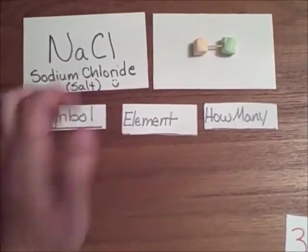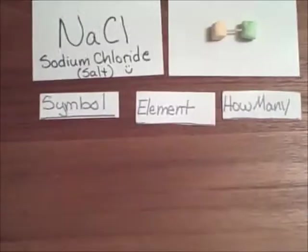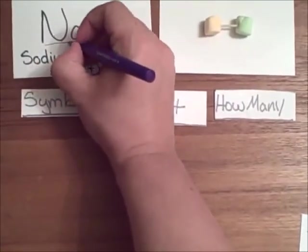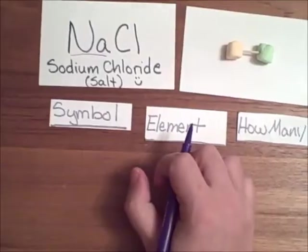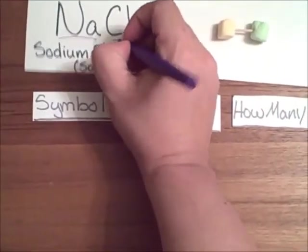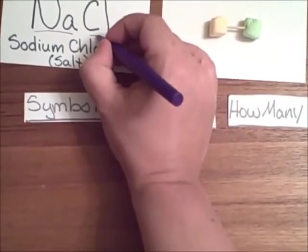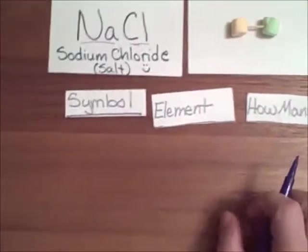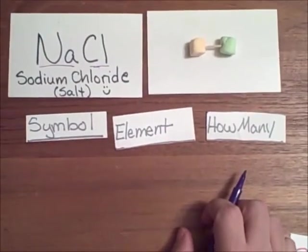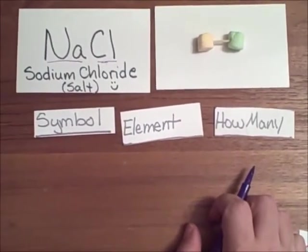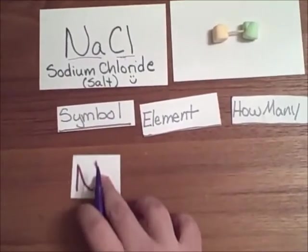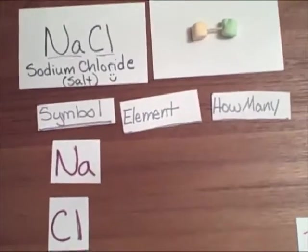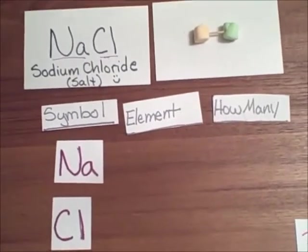So this whole thing here, the whole Na, this whole thing is one symbol. Same with the Cl. That's all one symbol as well. So the Na is one, the Cl is one. So since I already gave you that, I'll just go ahead and pull this up. So those are our two symbols. We have two elements here that make up salt.